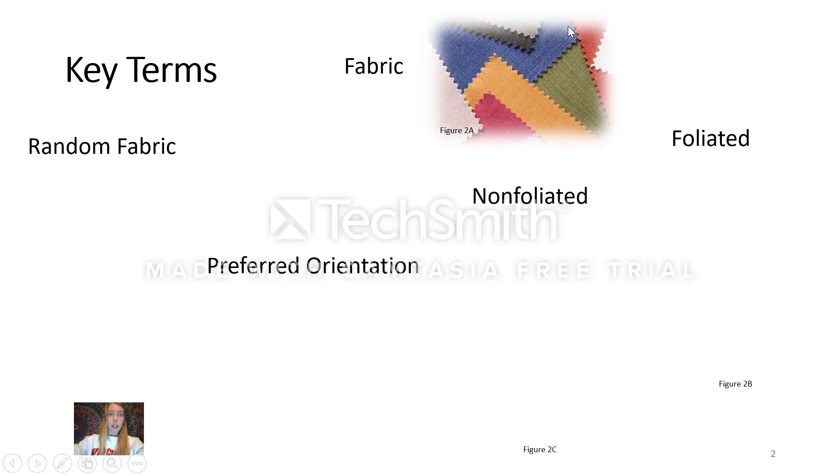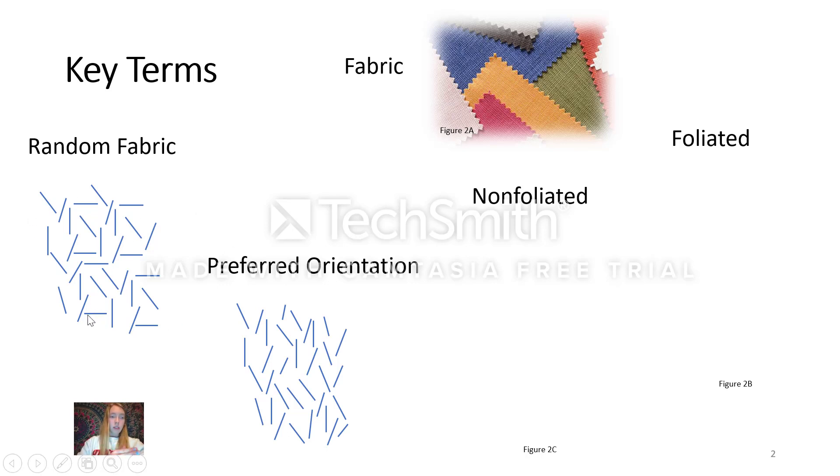We'll start with some terms useful in understanding metamorphic texture. Fabric refers to rocks in a way similar to how the word fabric in English refers to the arrangement of fibers or threads in clothing. Most igneous and sedimentary rocks have random fabrics, whereas metamorphic rocks can develop preferred orientation after being subjected to direct pressure. In random fabric, the grains are arranged randomly, whereas in preferred orientation, the grains get compressed and aligned — relatively pointed in the same direction, though still not perfectly parallel to each other.